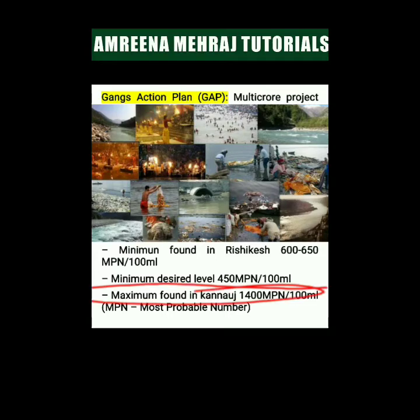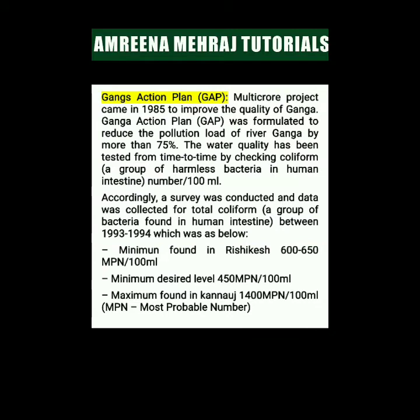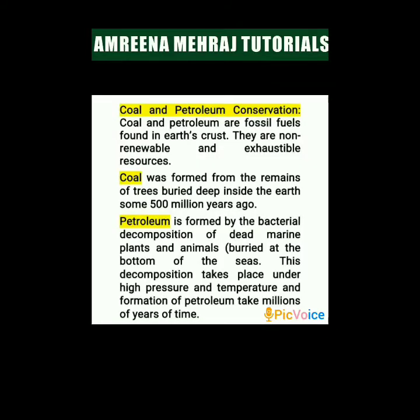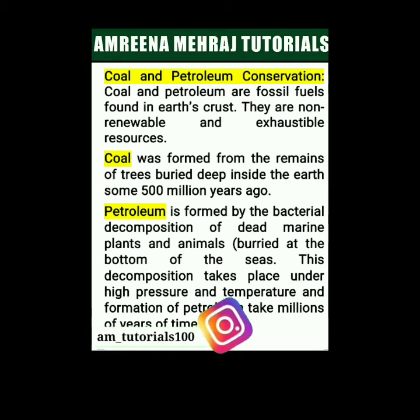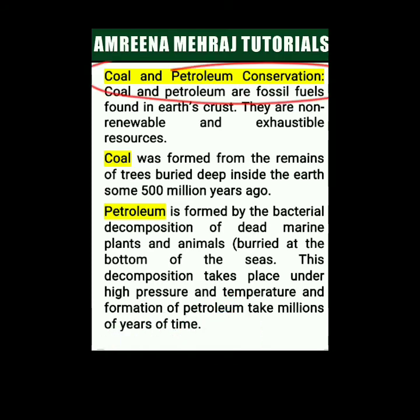So you can see that between 1993 and 1994 there had still been no improvement in pollution — the level exceeded 450 MPN per 100 ml, reaching as high as 1400, and it exceeds even this in current times. I think the Ganga Action Plan was an unsuccessful plan. This is pick voice number seven. Now let us understand about coal and petroleum conservation. Coal and petroleum are fossil fuels found under the earth's crust.